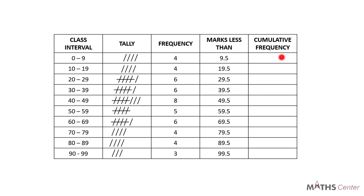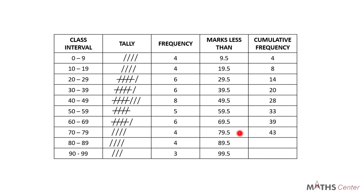Let's work on the cumulative frequencies. The cumulative frequency for a particular interval will be the sum of the frequencies up to that interval. The first frequency is 4, so the first cumulative frequency will be 4. The next one is 4 plus 4 which is 8. Then 8 plus 6 which is 14. Then 8 plus 20 which is 28. Then 28 plus 5 which is 33, then 33 plus 6 which is 39, then 39 plus 4 which is 43, then 43 plus 4 which is 47, and finally 47 plus 3 which is 50.